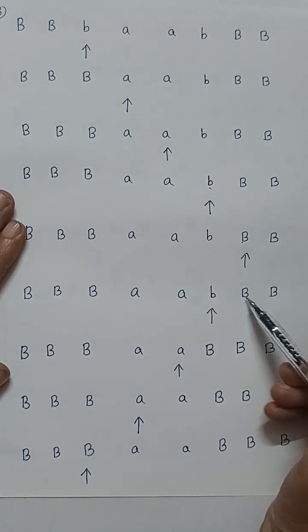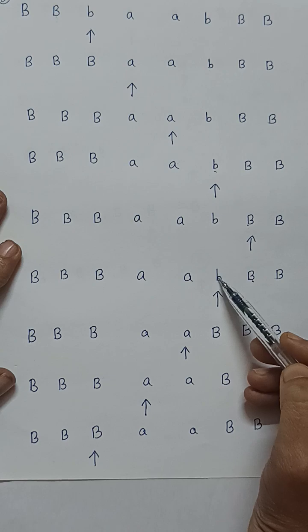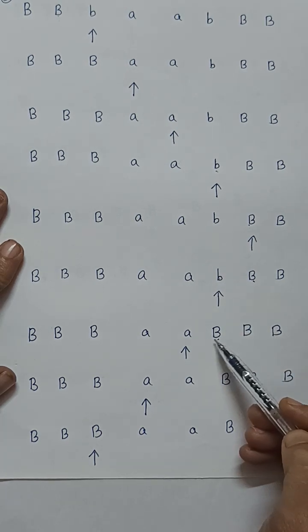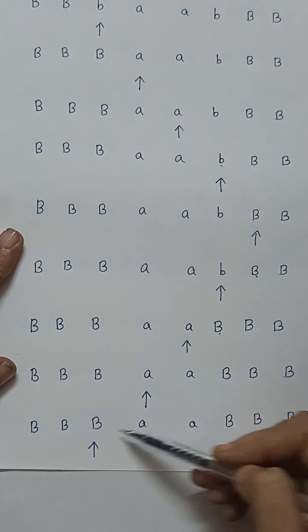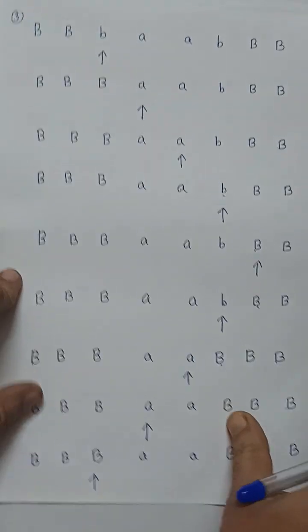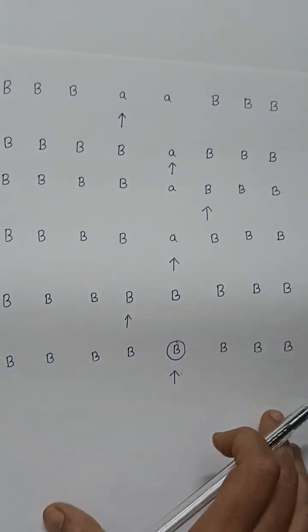Then read a, write a, read a, write a. Then we will get B. This B will be replaced and now it will be moving to right. Now read 'a' that is replaced with B, then move to right.